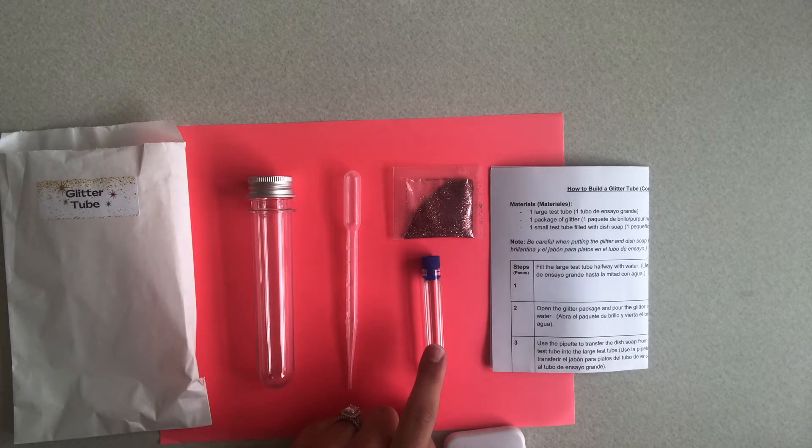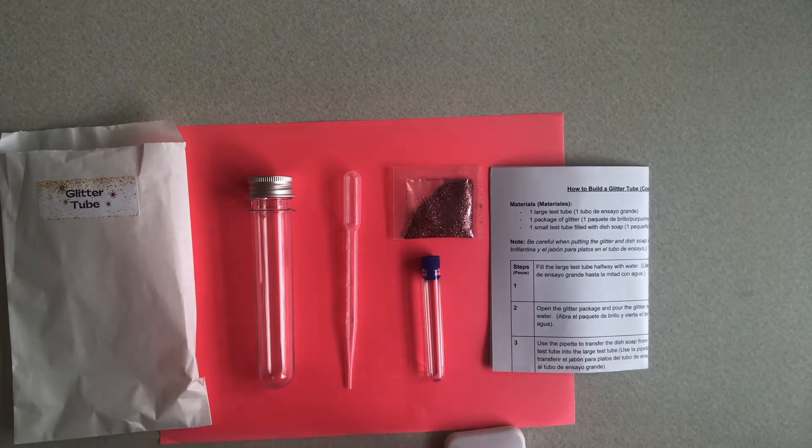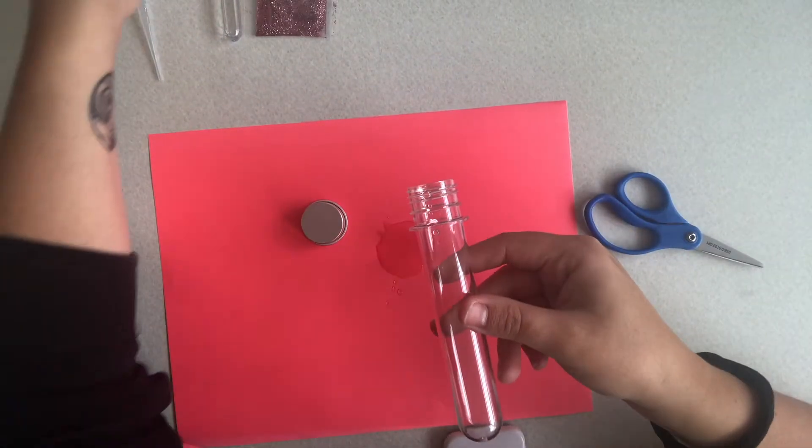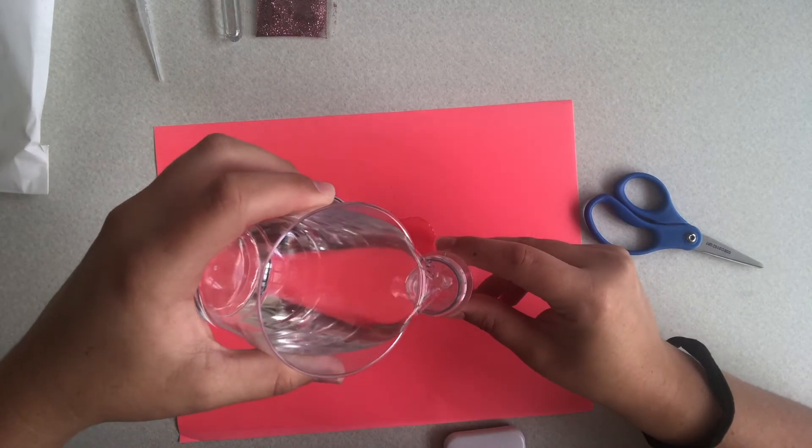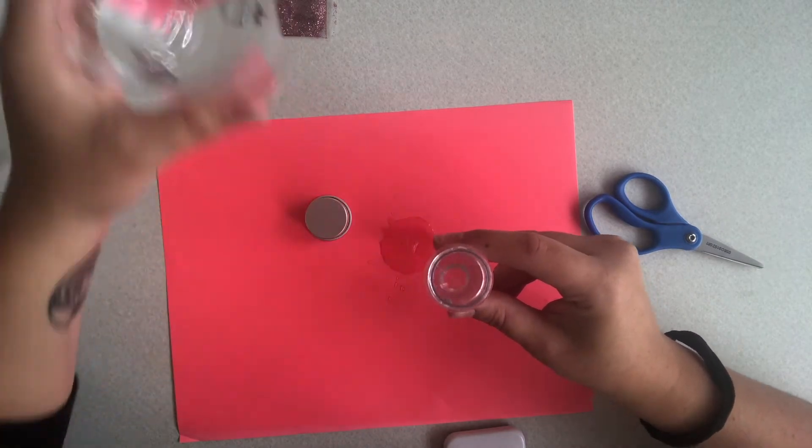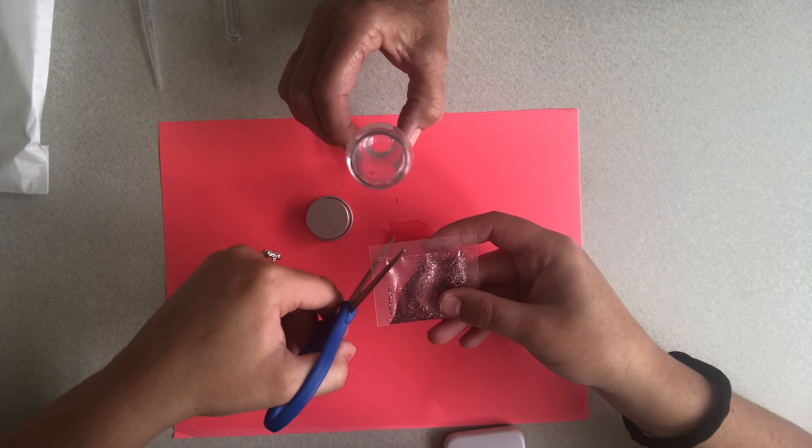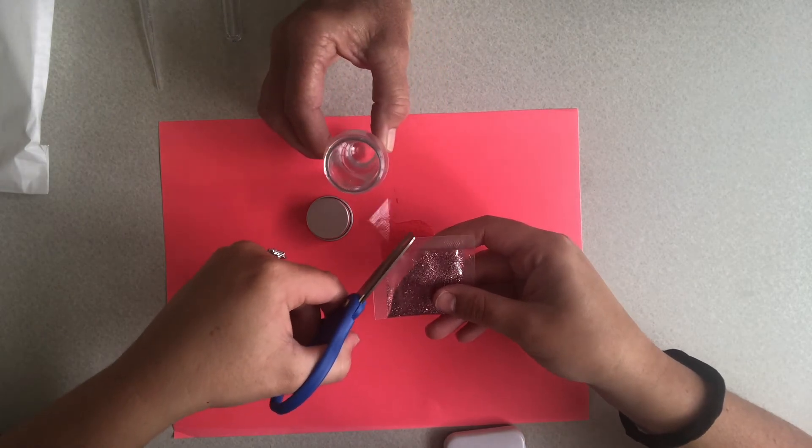Step one: pour halfway with water. Step two: open the glitter package and pour the glitter into the water.